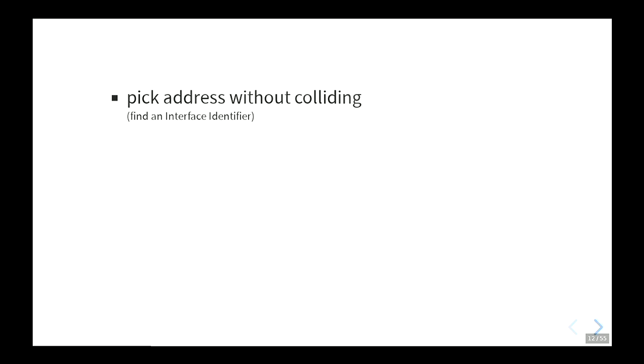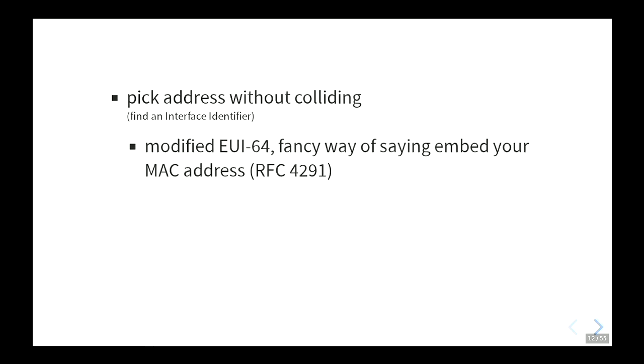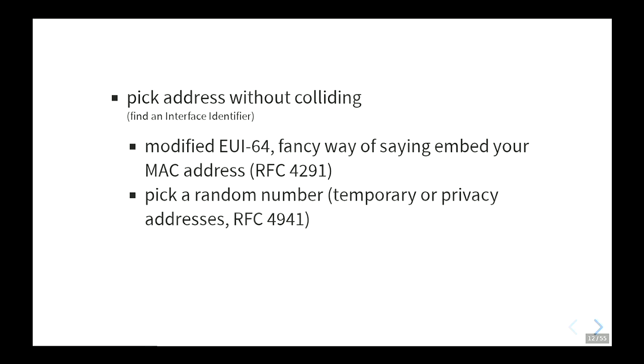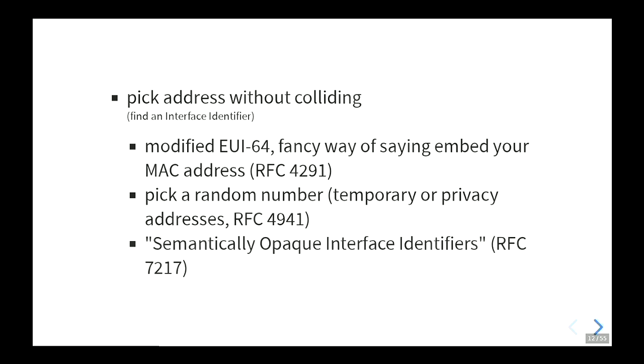How can you pick an address without colliding? In RFC terms, this is finding an interface identifier. One method is modified EUI-64, which is a fancy way of saying take your MAC address and shove it in there. Another way is pick one fully at random — those are temporary addresses. The now-preferred way over EUI-64 addresses are semantically opaque interface identifiers. The idea is that your address is random but stable over reboots — you pick a key, do some hashing, and incorporate that into your address.